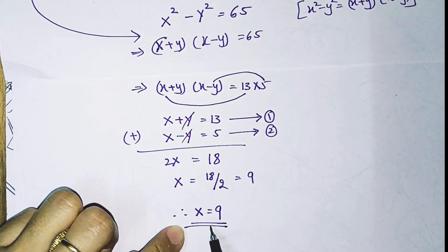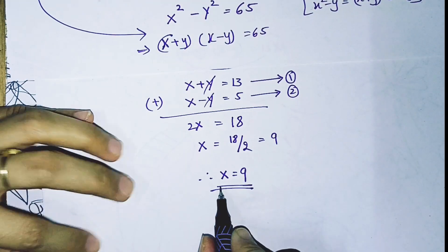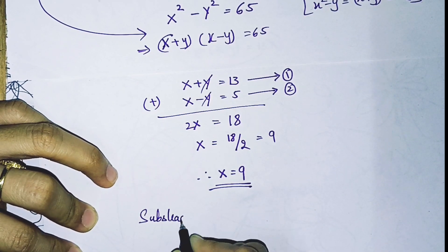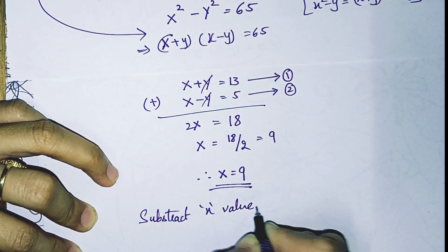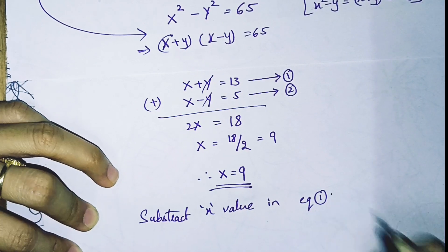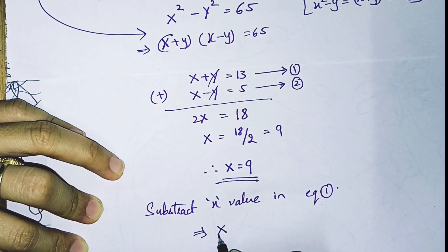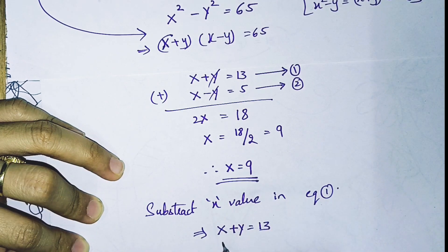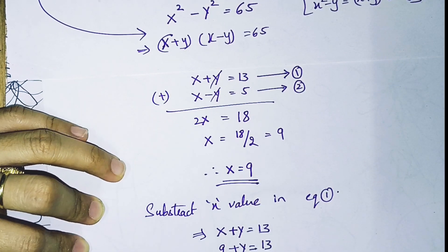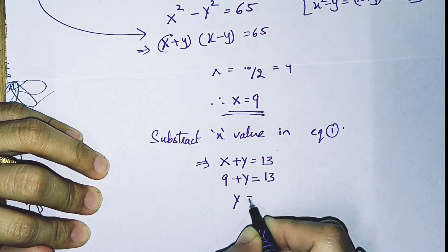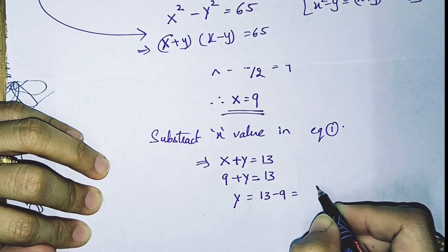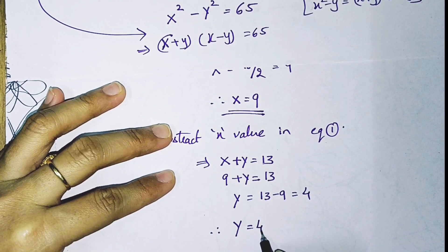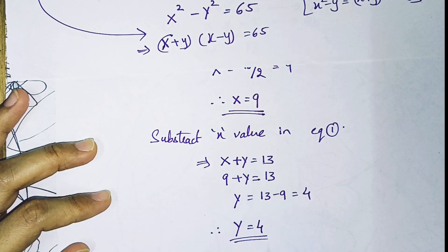Now I substitute x = 9 into equation 1: 9 + y = 13, so y = 13 − 9 = 4. Therefore the value of y is 4. I now have both x and y.